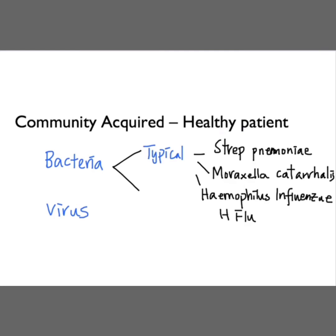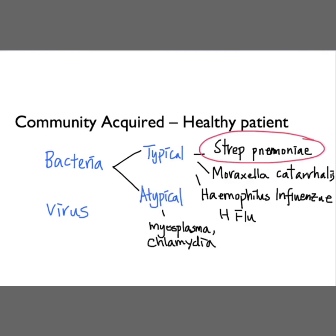In terms of atypical organisms, they can include Mycoplasma and Chlamydia. These organisms do not give the typical signs and symptoms of pneumonia. For viral infection, multiple viruses can cause pneumonia including the influenza virus and RSV. Viral infections often come in epidemics. Patients infected by a viral pneumonia can also have bacterial pneumonia as well.